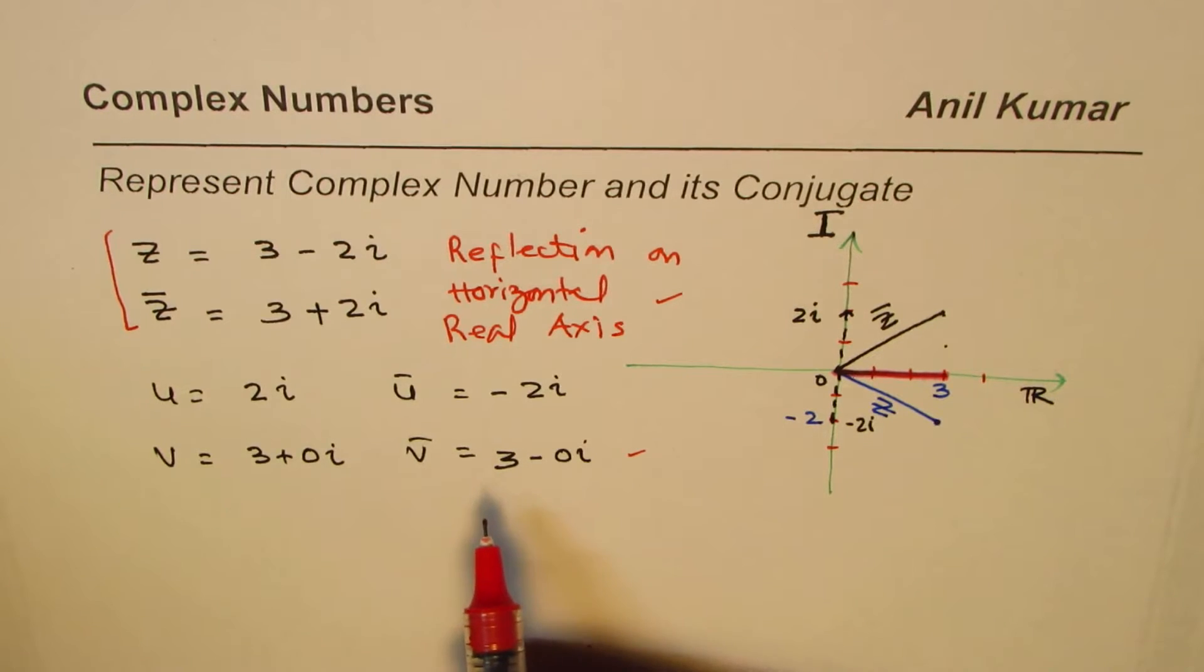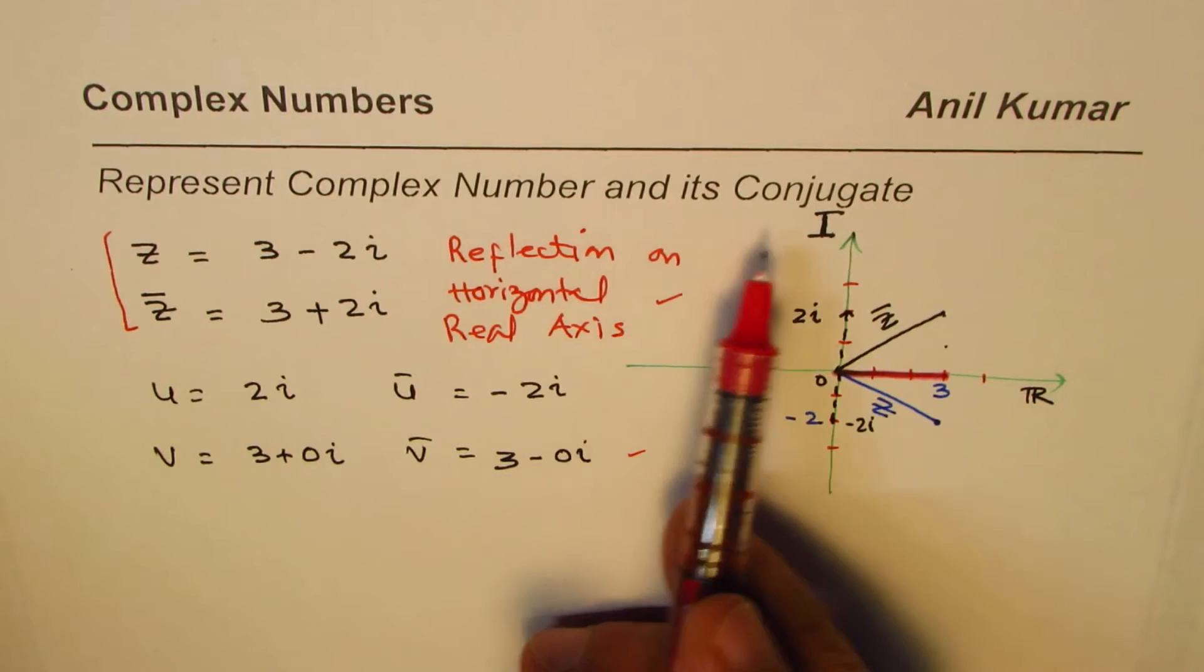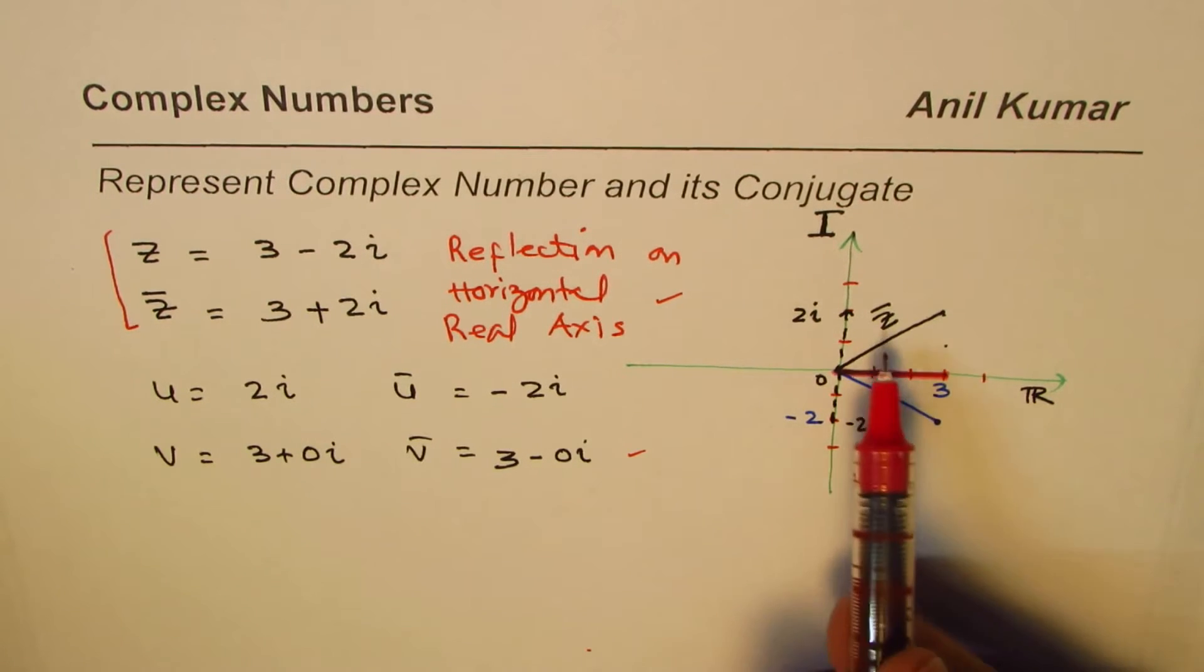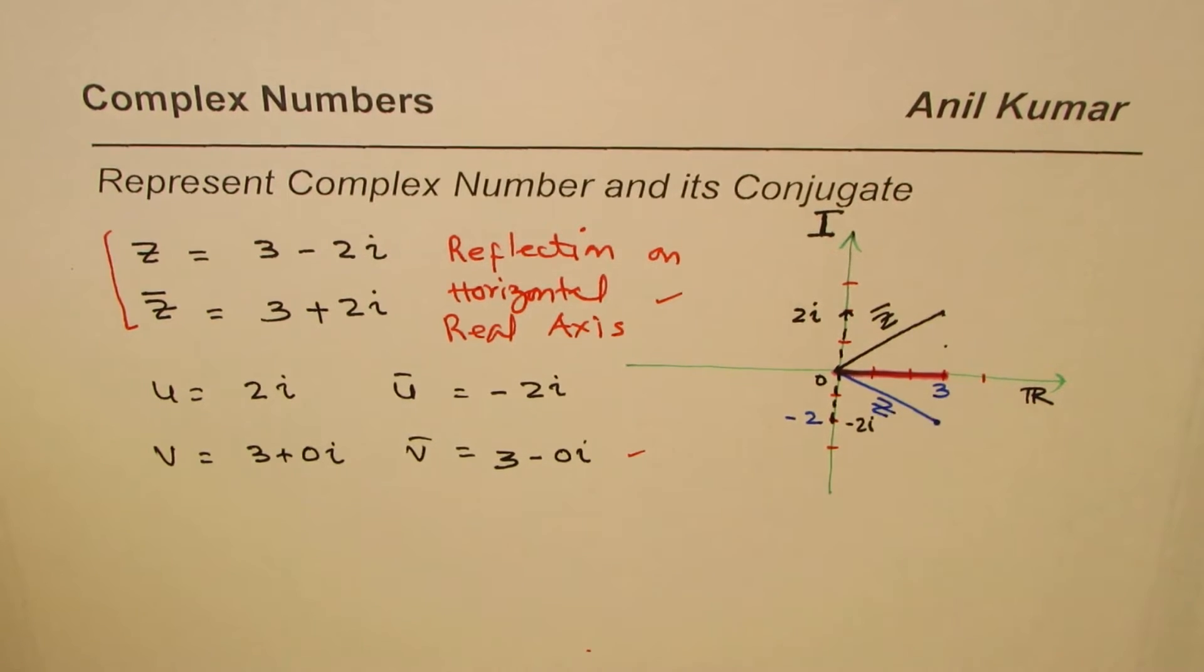What we have learned here is that a complex number and its conjugate can be represented on a plane, and they are mirror images of one another. As an exercise, you can try some vectors.